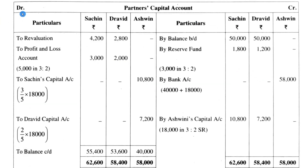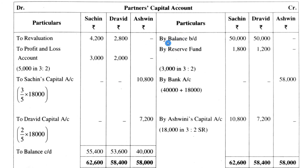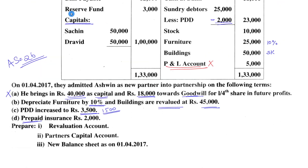Now moving to the partners capital account. Write all the format necessities and the names of all three partners: Sachin, Dravid, Ashwin. We always start the partners capital account from the credit side — if a partner is receiving an amount or being benefited, it goes on the credit side; if a partner is paying to the firm, it goes on the debit side. First entry: 'By Balance' — Sachin 50,000, Dravid 50,000, Ashwin dash (not yet a partner).